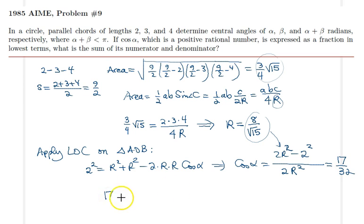As a result, the answer is 17 plus 32, because the question is asking for the sum of the numerator and the denominator, so therefore it comes out beautifully as 0, 4, 9, and we are done.